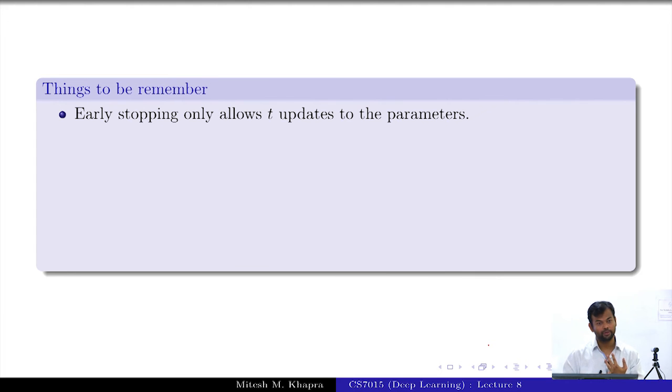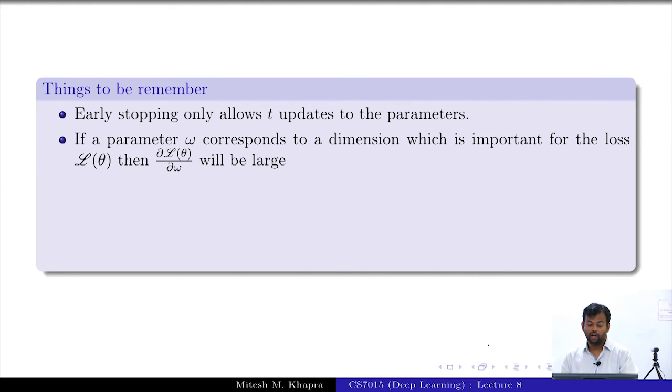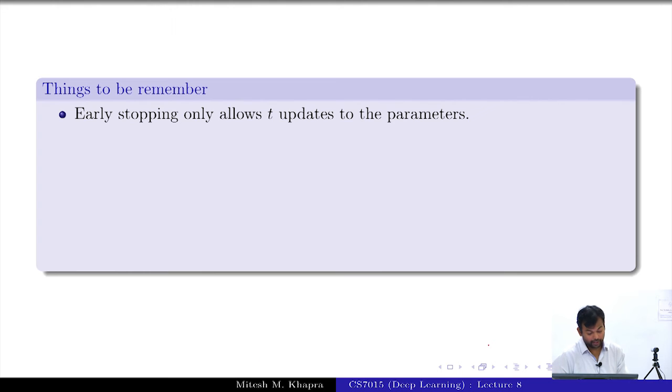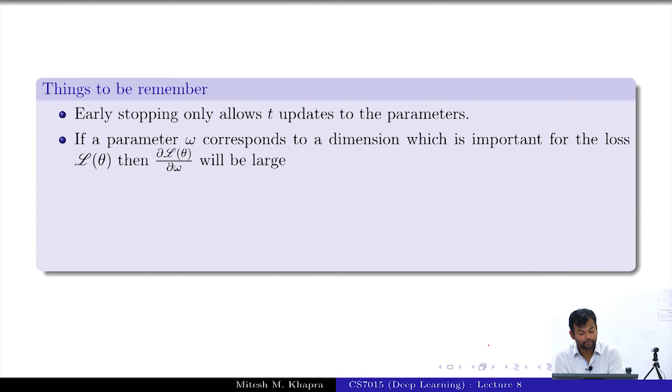The things to remember is that early stopping only allows T updates to the parameters. This is the important thing. Now if a parameter w corresponds to a dimension which is important for the loss, then what would this quantity be, the partial derivative of the loss with respect to that parameter? Let us take the Aamir Khan example, that whatever weight you give to whether the actor was Aamir Khan or not, if that is very important because if that feature is on your loss completely changes and so on. If you do not learn the weight correctly that feature is very sensitive. So for important features the loss would be very sensitive to the changes in the weights of these features.